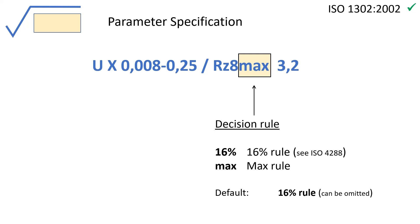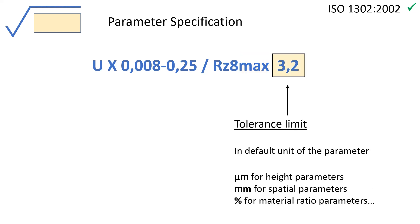If the max rule is required, it has to be written explicitly as on this example. Finally, the tolerance limit is written without unit. The unit is deduced from the specified parameter.